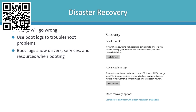One thing I like to do in advance is to enable the boot logging option in Windows. You can do this by pressing the F8 menu. What this does is it creates a log file called ntbtlog.txt — a text file that is saved in the Windows registry. When boot logs are performed, this file is appended, so it's very useful to troubleshoot common problems because it logs all of the drivers, services, and resources as they're loading.